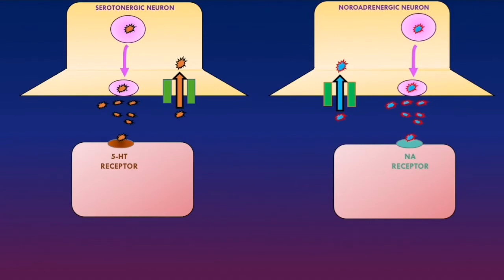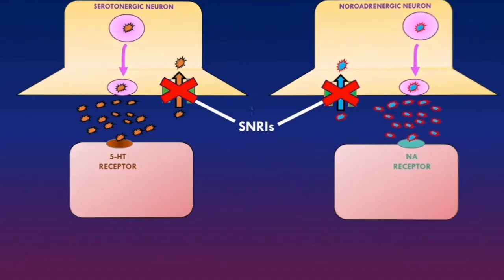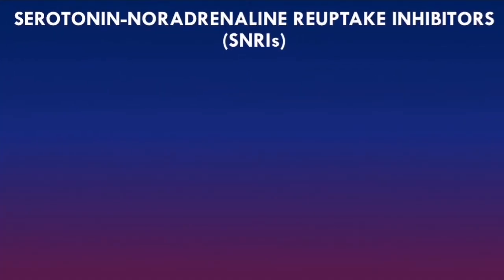Serotonin noradrenaline reuptake inhibitors, or SNRIs, work by inhibiting both serotonin and noradrenaline reuptake in serotonergic and noradrenergic neurons. This increases the concentration of both neurotransmitters in the synaptic cleft, which is thought to help with the symptoms of clinical depression based on the monoamine hypothesis. SNRIs are generally used second-line to SSRIs.